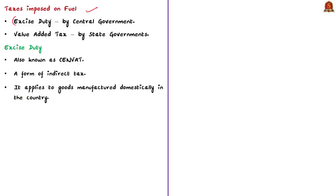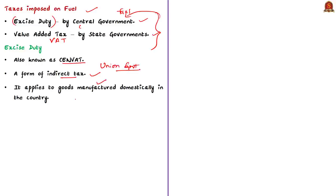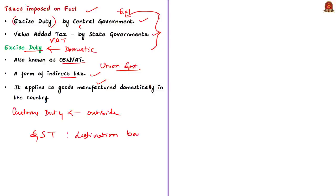The two major taxes influencing petrol and diesel prices are excise duty imposed by the central government and value added tax (VAT) imposed by the state government. Excise duty is also known as Central Value Added Tax (CENVAT), which is a form of indirect tax imposed on goods for their production, licensing, and sale, levied by the central government and paid by the manufacturer at the time of introduction of goods into the market. Excise duty applies to domestically manufactured goods, whereas customs duty is levied on goods coming from outside the country. The Goods and Services Tax, a destination-based indirect taxation system introduced from 1st July 2017, subsumed many indirect taxes, but excise duty on petroleum products and liquor are kept outside the GST system.